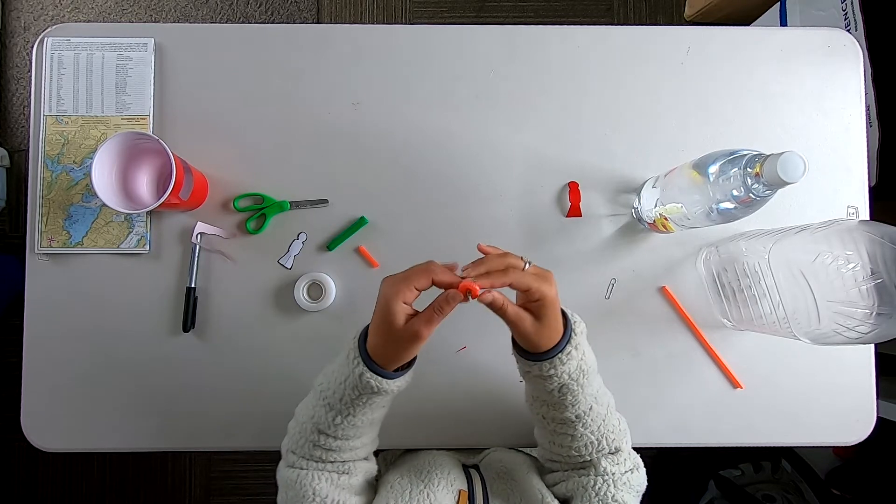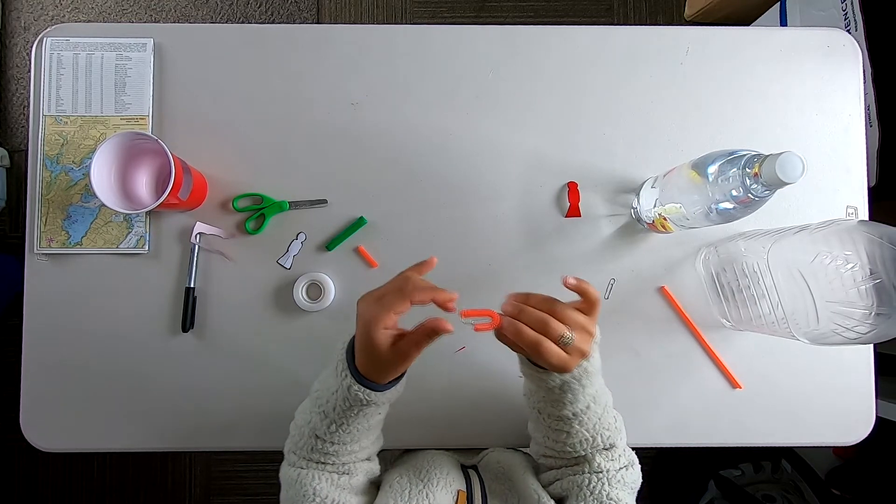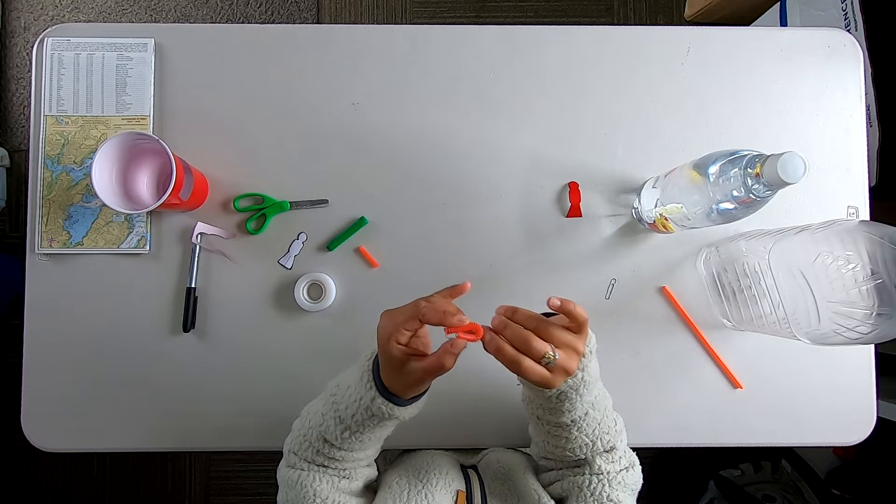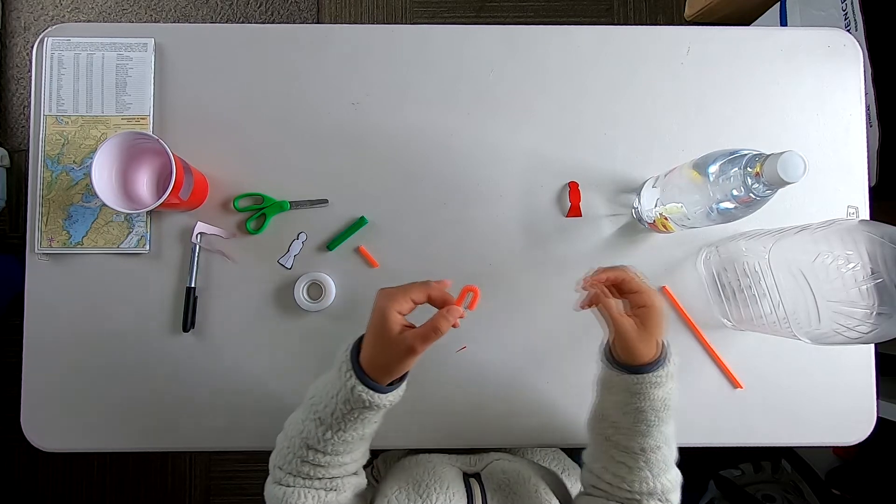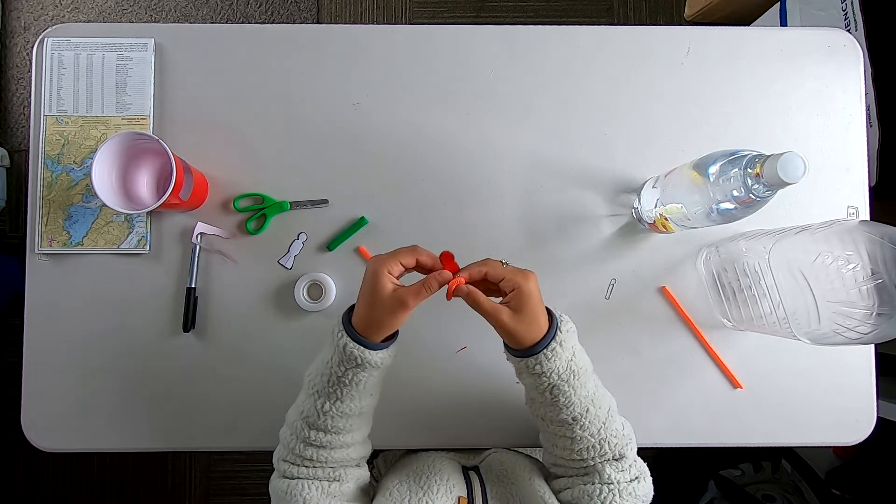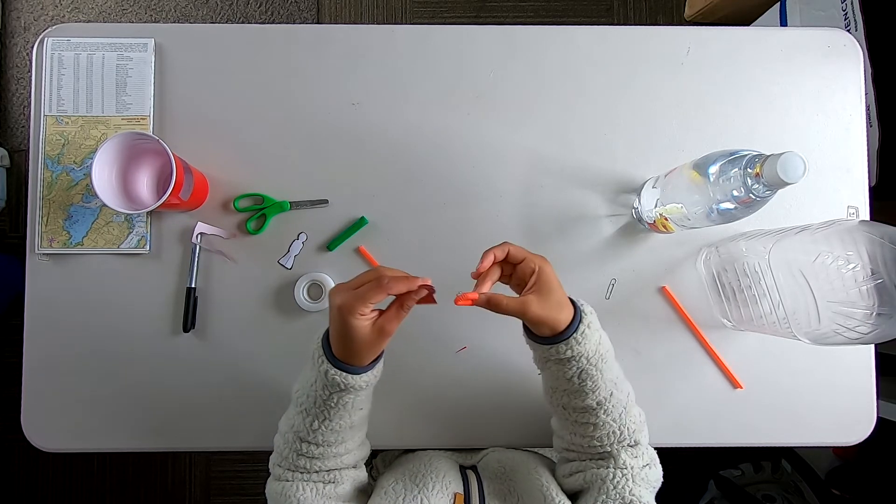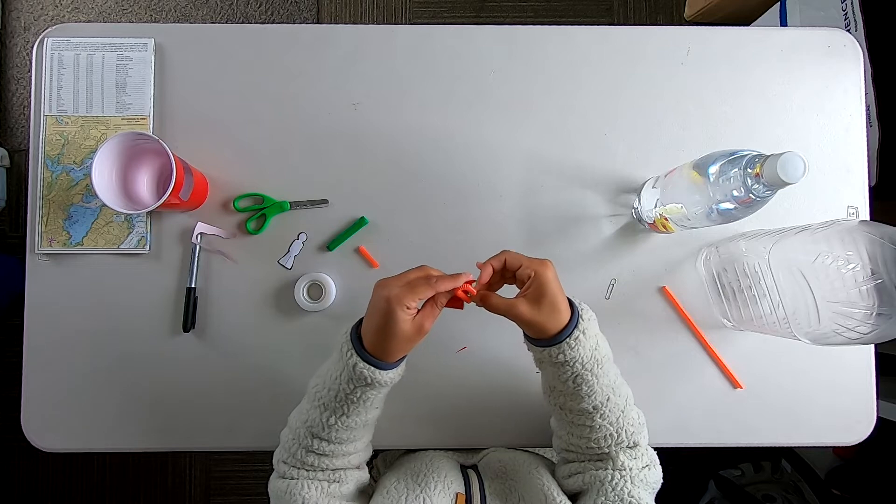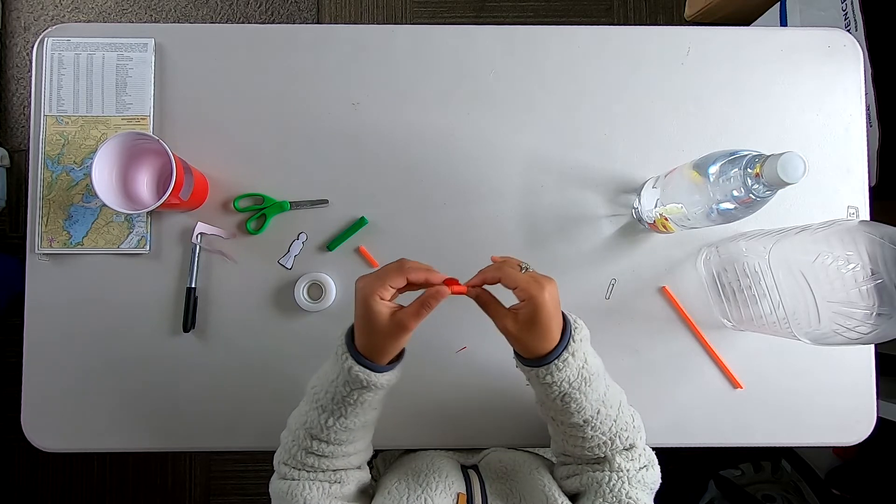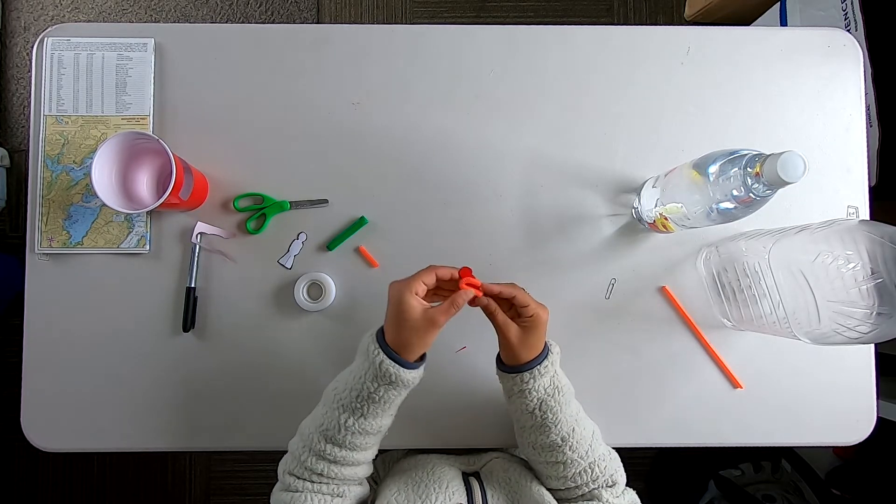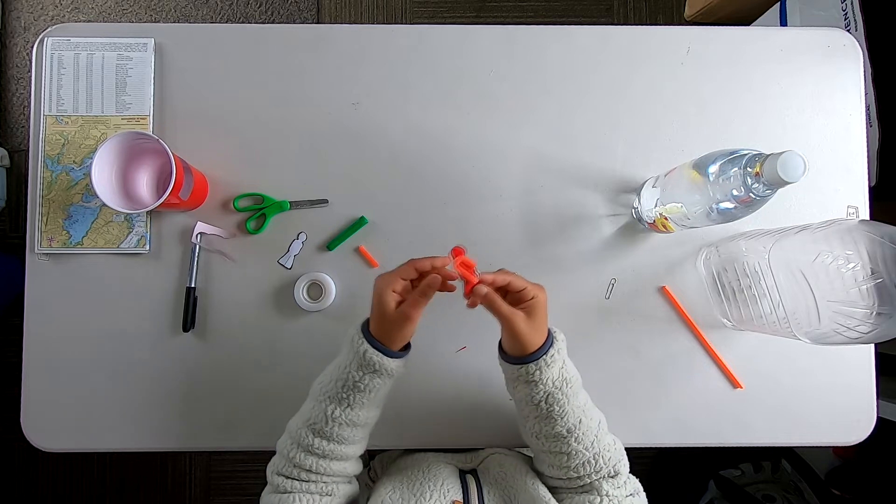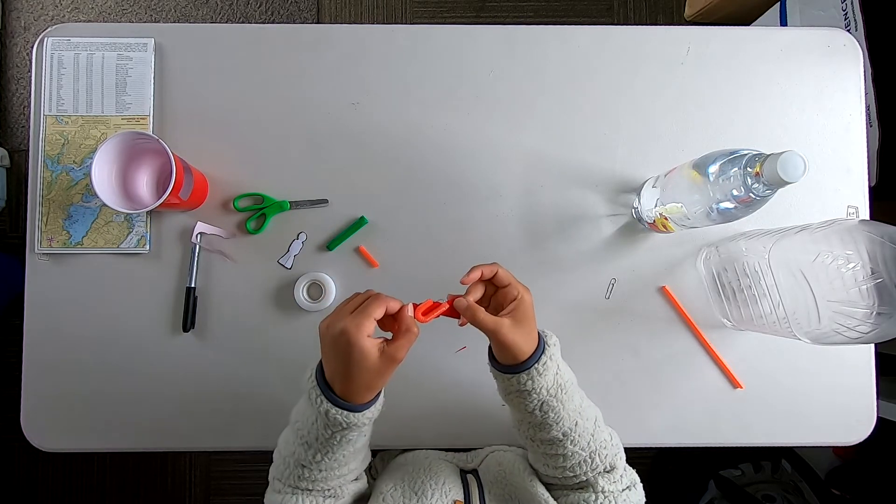So you have something that looks like this. Now we're going to go ahead and grab our scuba diver and put the tank on him. So we're going to take the paper clip and just slide it right on just like this. So now he has a little diving tank.